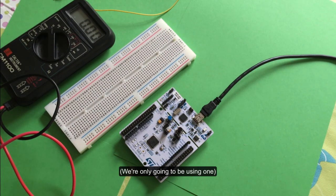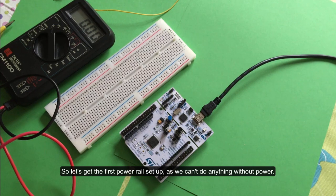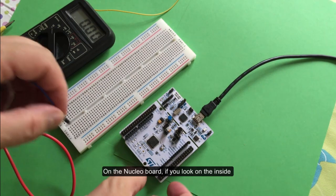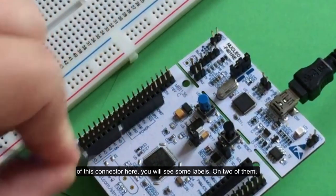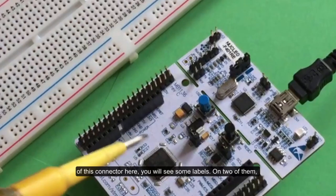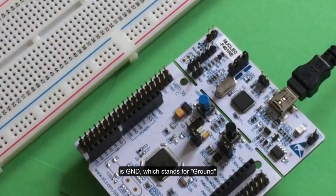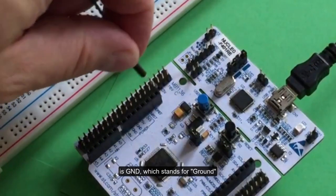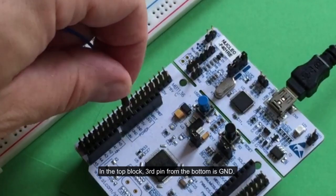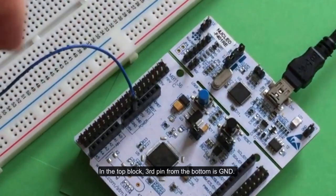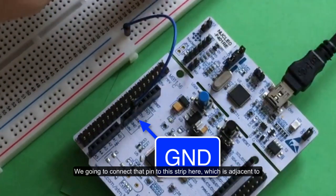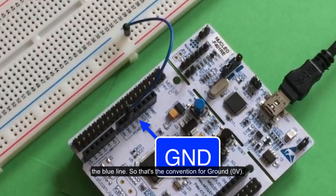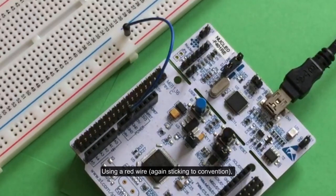Let's get the first power supply set up because we can't do anything without power. On the Nucleo board, if you look on the inside of this connector, you'll see some labels and one of them is GND which stands for ground. For the top block, it's the third up from the bottom, and we're going to connect that to this strip here which is adjacent to the blue line. That's the convention for zero volts.